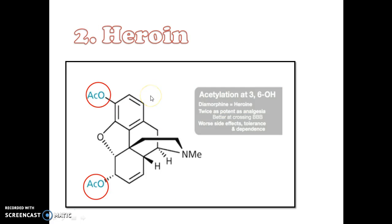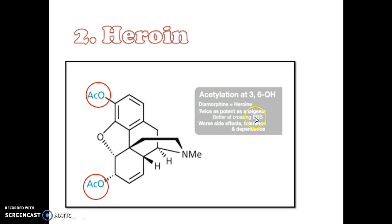The 3,6-diacetyl derivative of morphine is commonly known as heroin. Heroin is twice as potent as an analgesic and it better penetrates the blood-brain barrier.